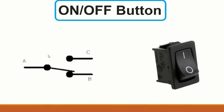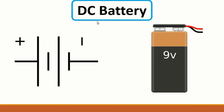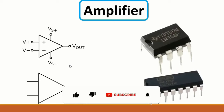Then we have the off button. Here we have the DC battery symbol - you will find this symbol where there is a DC battery. Then we have the amplifier.